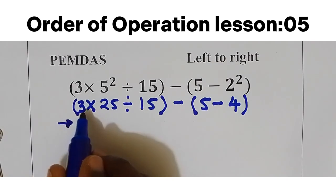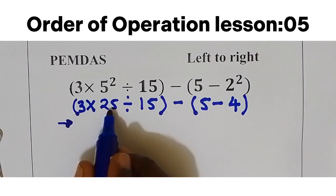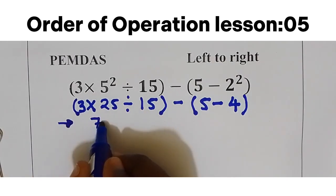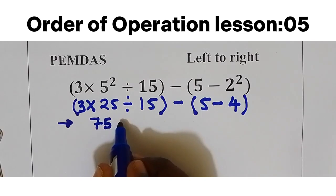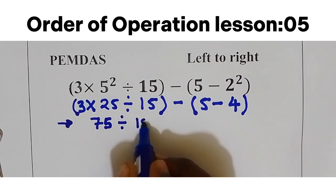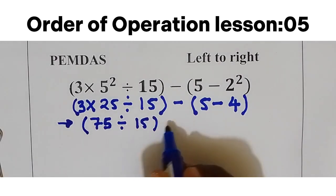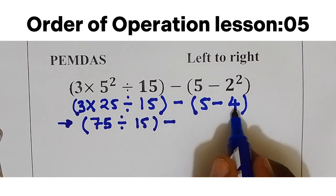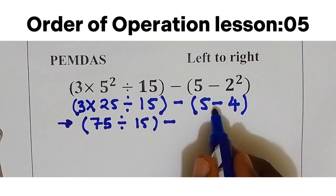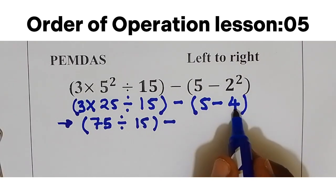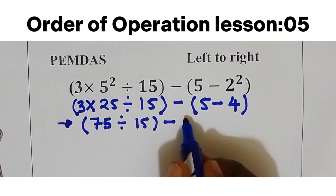From left to right, we are going to take 3 multiply by 25, that is going to be 75, then we are going to write the rest: divide by 15, then take away. In the second parentheses we have only subtraction, so I'm going to take away 5 take away 4, then I'm going to get 1. So here we get 1.